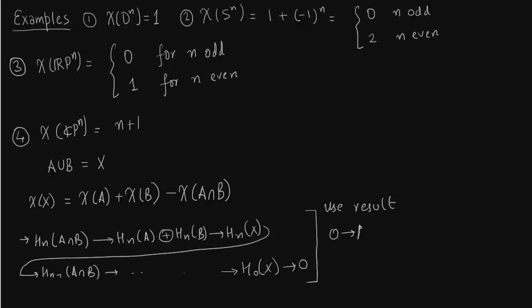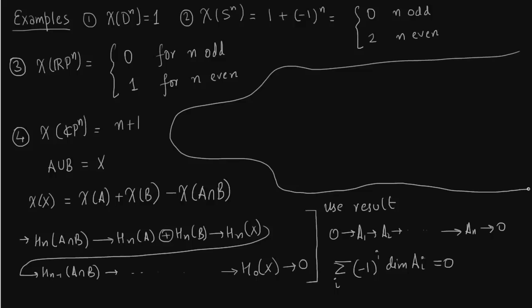If we use the following result from linear algebra. So we have a following exact chain. The kernel is equal to image. This exact chain of vector spaces. Then this holds. You sum it over its dimensions with alternating sign. And what you get is zero. So you use this formula for the Mayer-Vietoris sequence. And you get Euler characteristic of X is Euler characteristic of A plus B minus A intersection B. Or you can simply use the way you use probability.